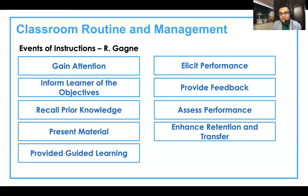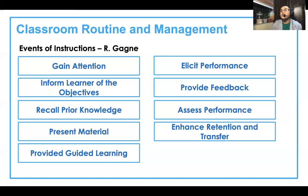Next is assess performance — that's when you provide a performance task that has to be graded. Then enhance retention and transfer. This is when you conduct generalization, which can come from your students or from you. You can have them do an assignment or a three-two-one activity: three things you learned, two things you want to know more about, and one question you want to ask your teacher. That's the three-two-one method of closing your class.